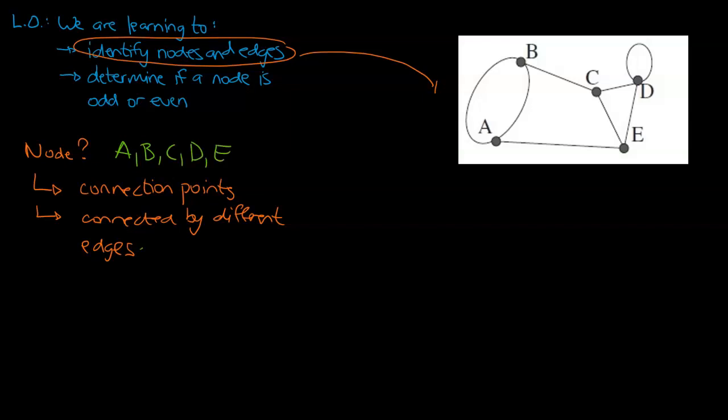So the next thing we need to think about, because our definition of a node included the word edge, we do need to be aware of what edges actually are. So what are edges? Edges are those lines, and I've got an example there. So there's B, line A to B. So the edges are those lines that connect those two points. They are the lines that connect different nodes.